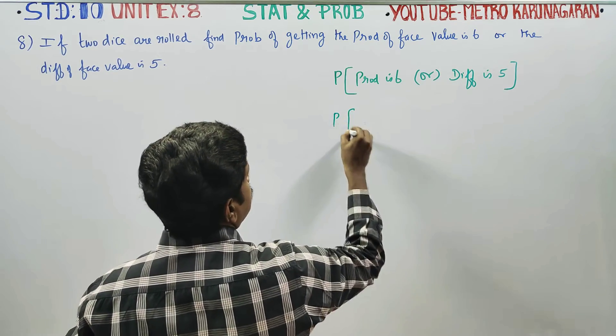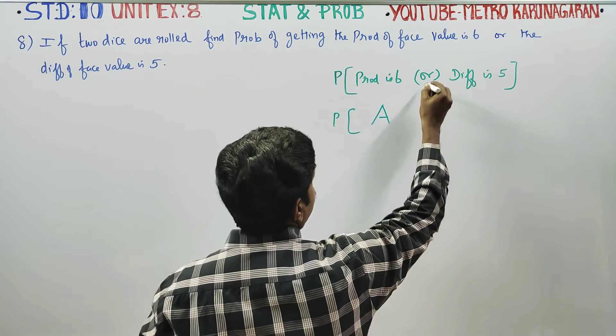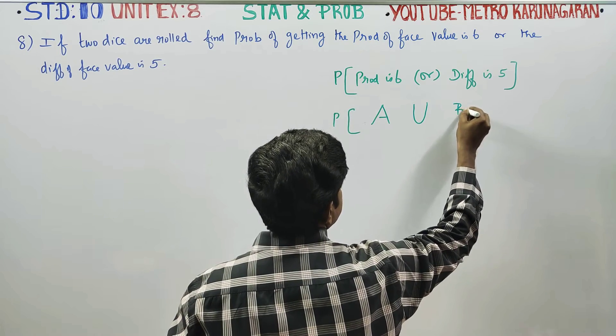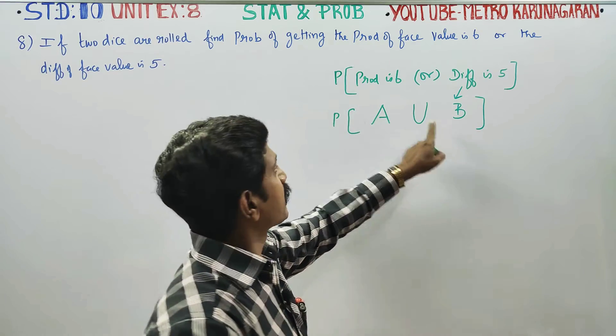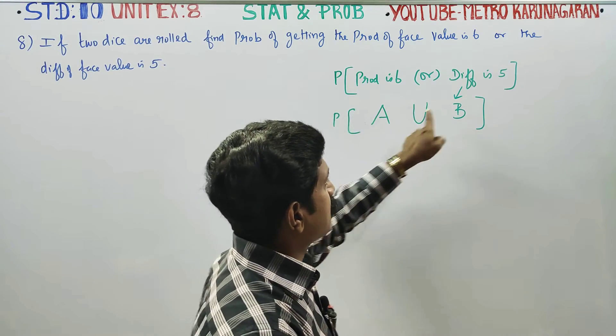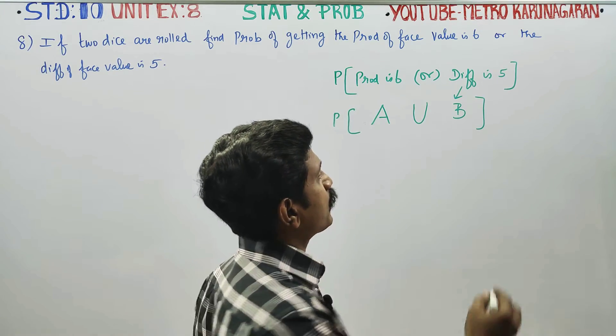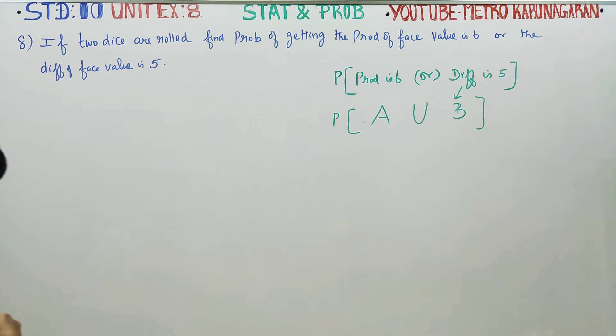Let us make this problem as A, product is 6, or - 'or' means union - difference is 5. We shall take this event as B. Product is 6 as A and difference is 5 as B. Therefore, you have to find probability of A union B. First of all, we will start with our sample space.